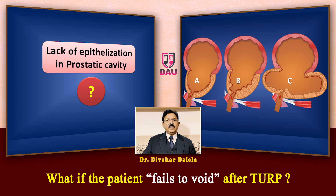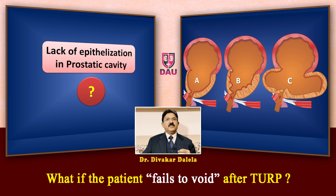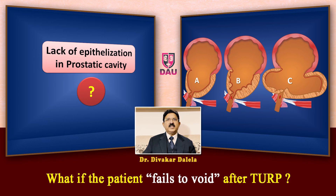My feeling is that with these three kinds of prostatic cavities - a smooth fossa, an uneven fossa, and a large fossa - the duration of epithelization will be different, and therefore the timing of the voiding trial after TURP should change. At least in large prostate glands, by large I mean more than 80 cc, removing the catheter on the second or third day carries the danger of a failed voiding trial. If you give sufficient time - five or six days - they will be fine.